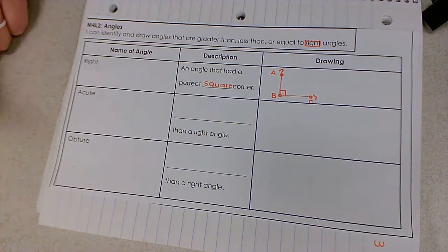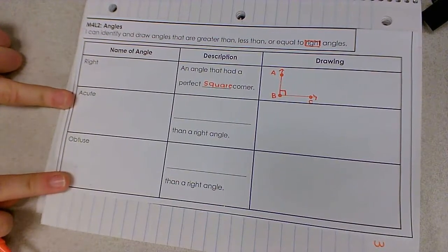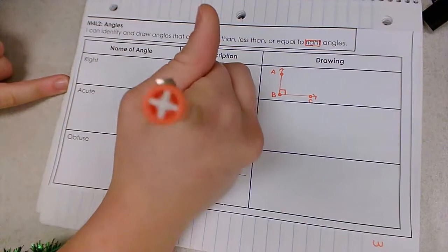Once we know how to identify a right angle now we can find acute angles and obtuse angles. Acute angles are so acute. They're exactly what they sound like. They are smaller than a right angle.